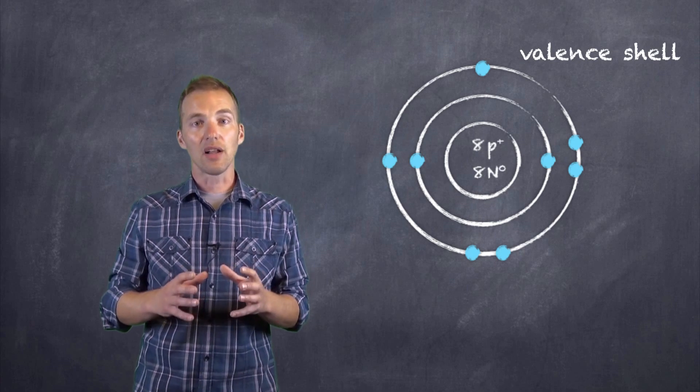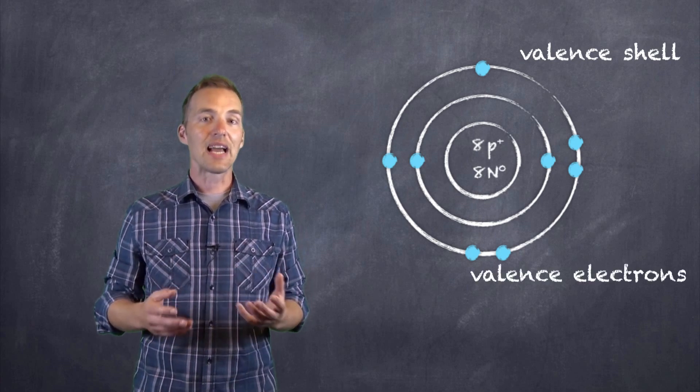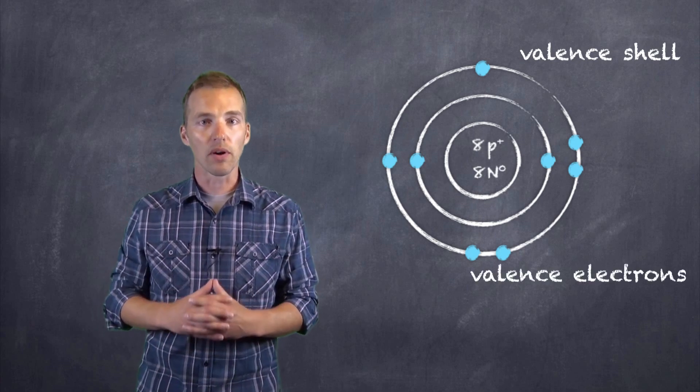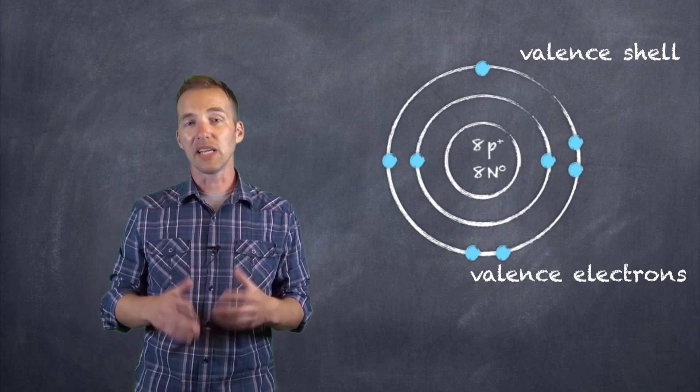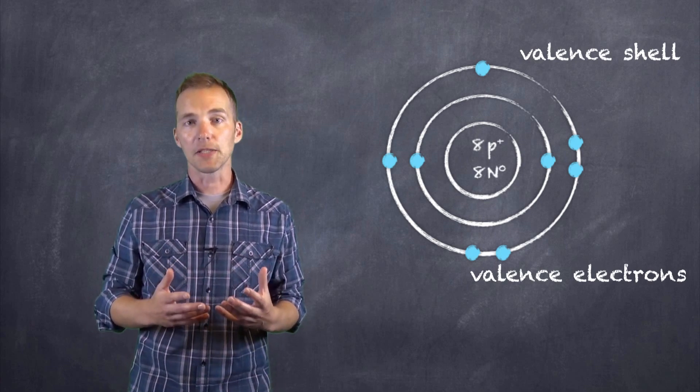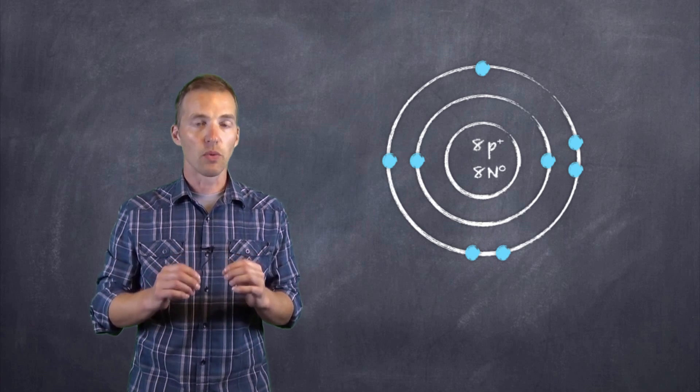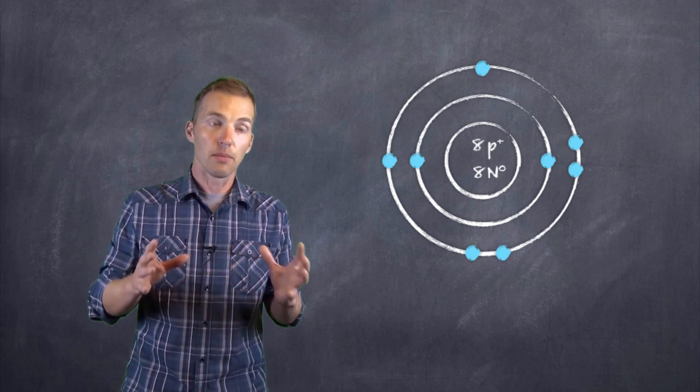Now the valence shell contains valence electrons, and these valence electrons are important because for the majority of elements, they're the ones that are involved in bonding and giving that element its chemical properties. Now those are the ones that we're going to focus on because those are the most important ones.